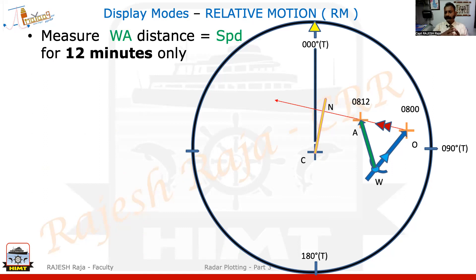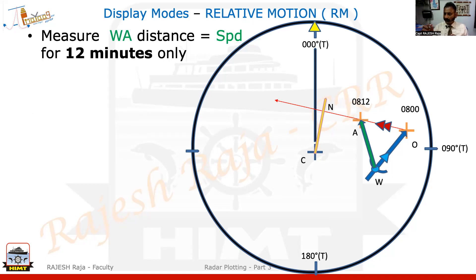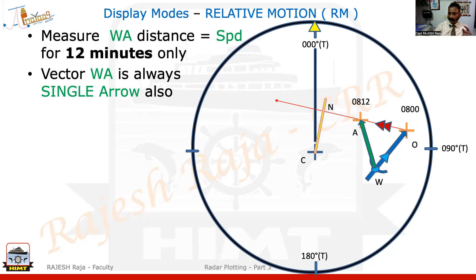To measure the speed of the target, I take my divider and measure the distance of the green color WA vector, then check it on scale number four. That distance is for 12 minutes — convert it for 60 minutes using the quick table or calculator. For example, if you get 3 miles: 3 divided by 12, multiplied by 60, gives you the speed for one hour. WA is represented by a single arrow — there is no change in the number of arrows.